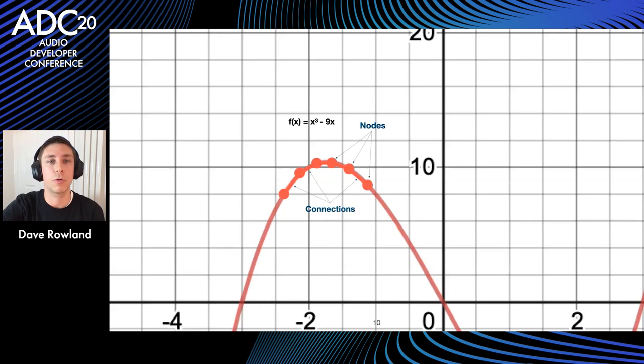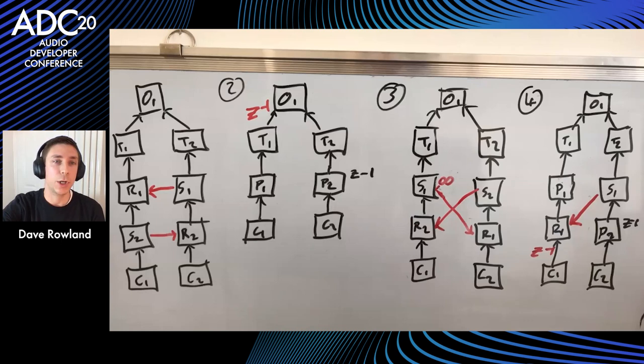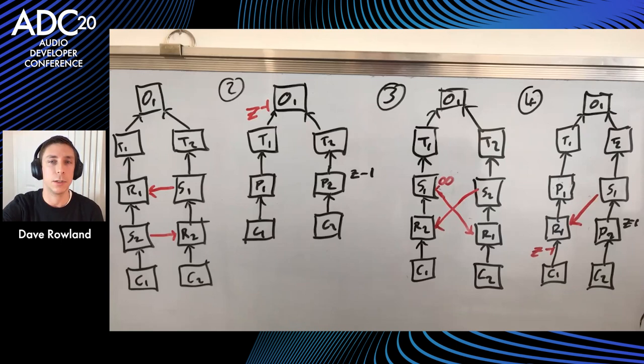About seven months ago when I started this work on graphs, this is what my whiteboard looked like. I'm showing this because it really helped me get to grips with how to structure these processing units and visualize some of the more difficult edge cases — you can see some with cycles. It's always worth putting pen to paper to visualize these abstract ideas.